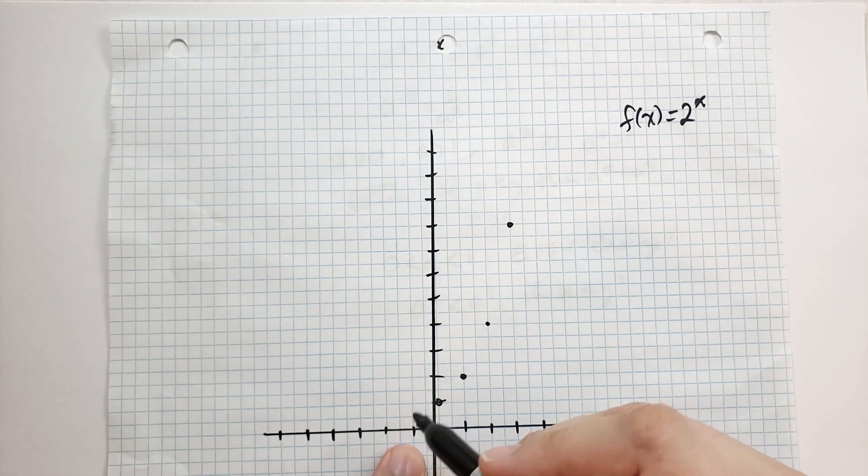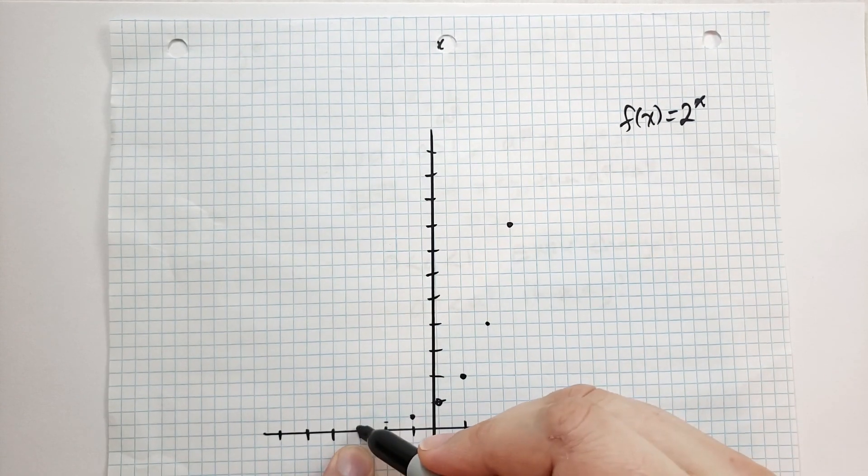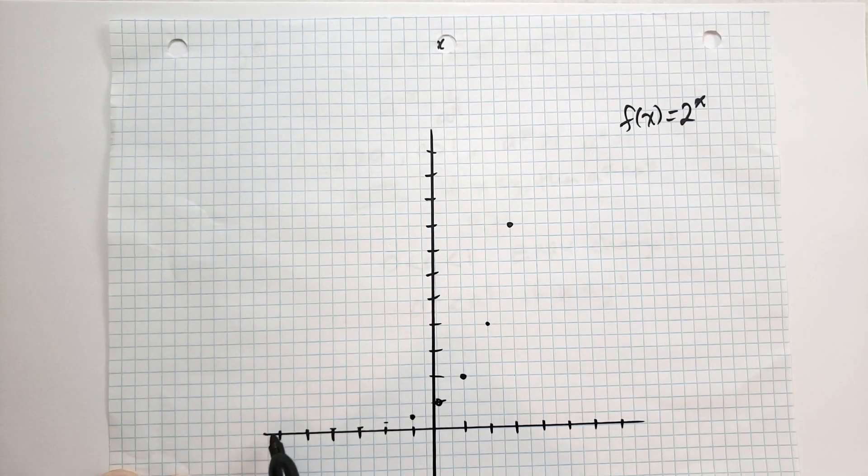At negative 1, that's going to be 1 half. At negative 2, 1 quarter. Negative 3, 1 eighth. Then 1 sixteenth. And it's going to approach this but not quite reach it.